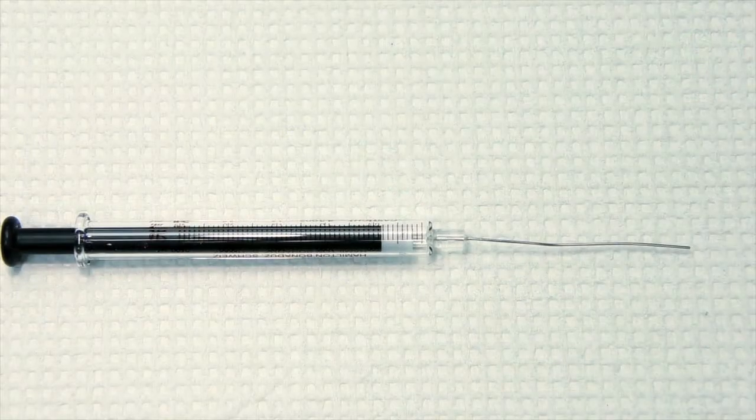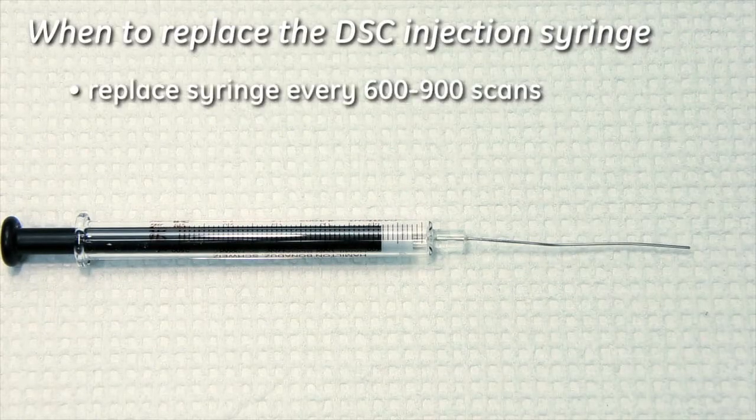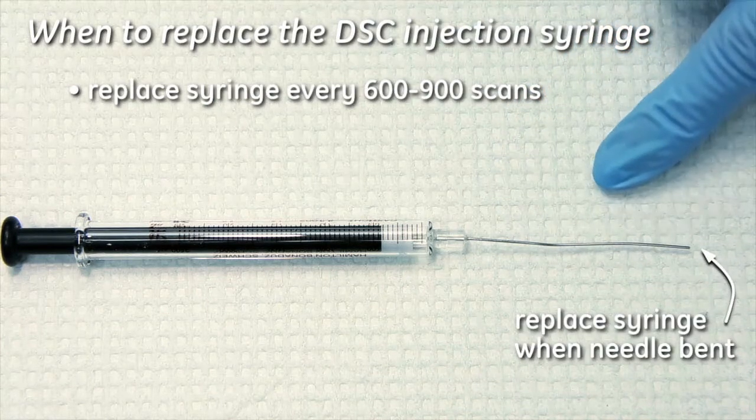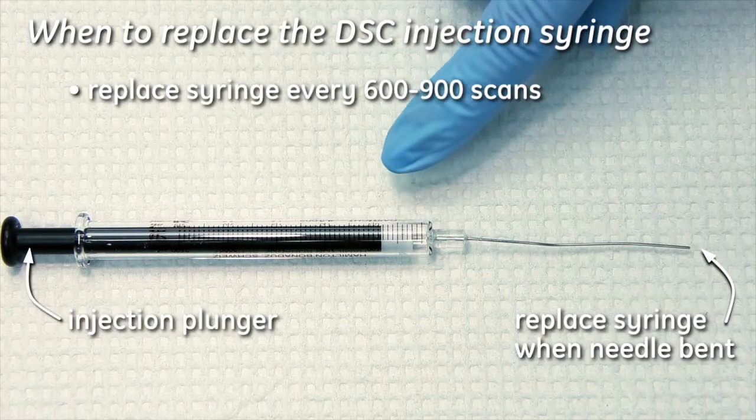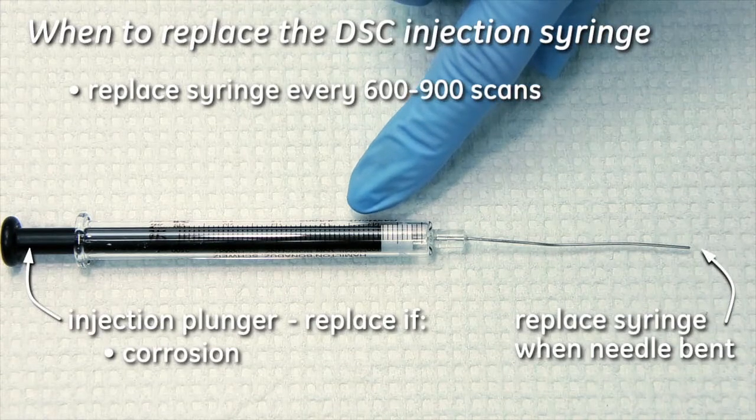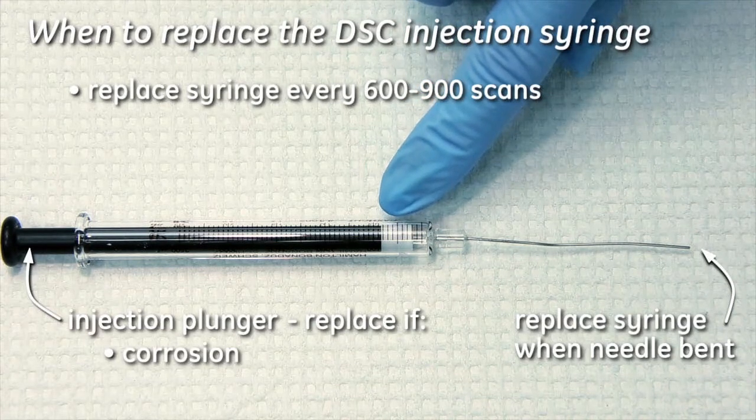You want to replace the DSC injection syringe every 600 to 900 scans when the needle is bent. You also want to replace the injection plunger if you see obvious corrosion around the lower black area or the lower white area of the piston.